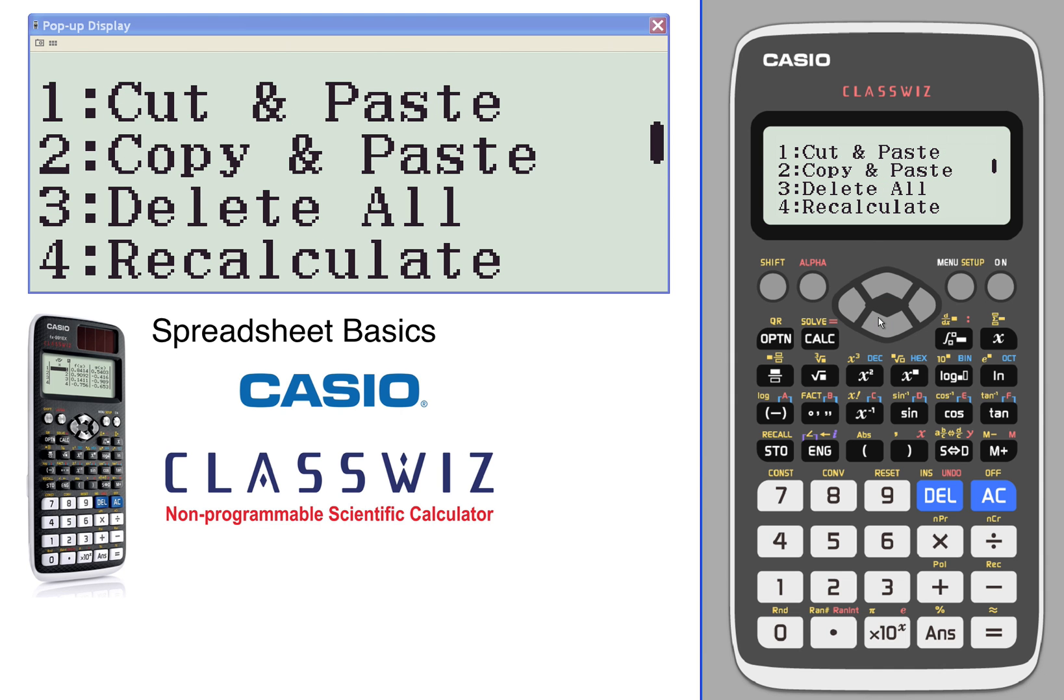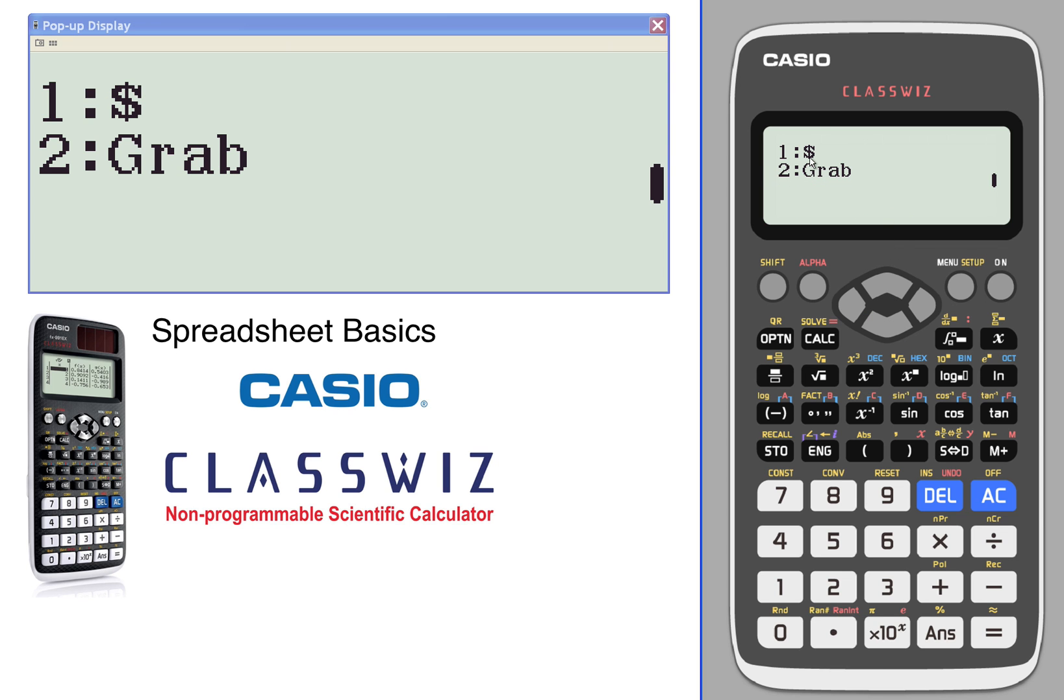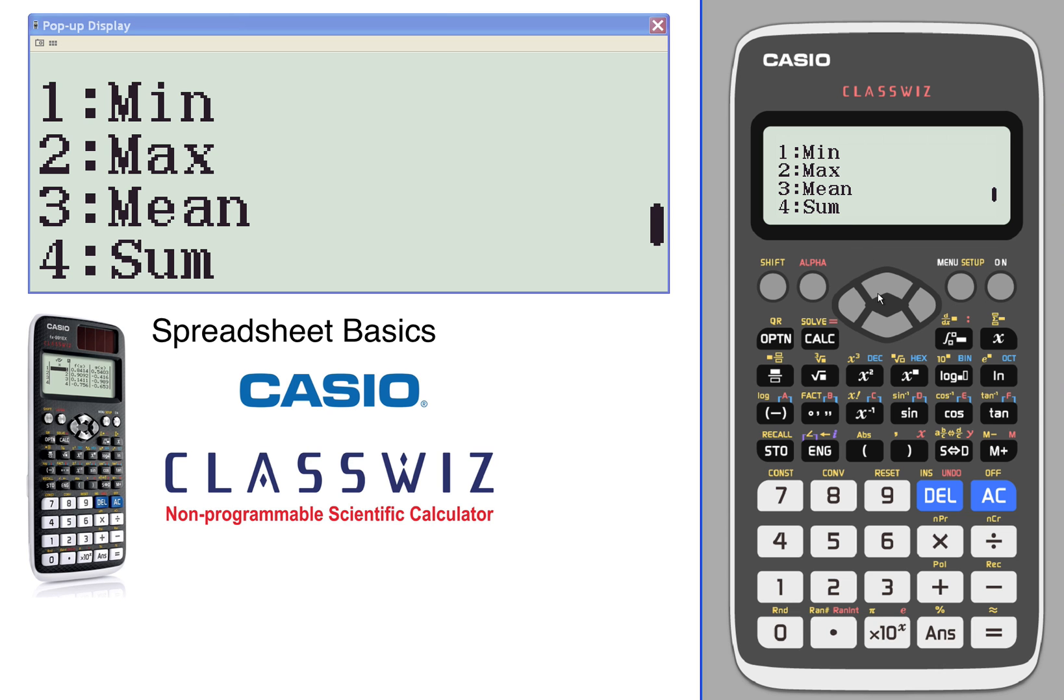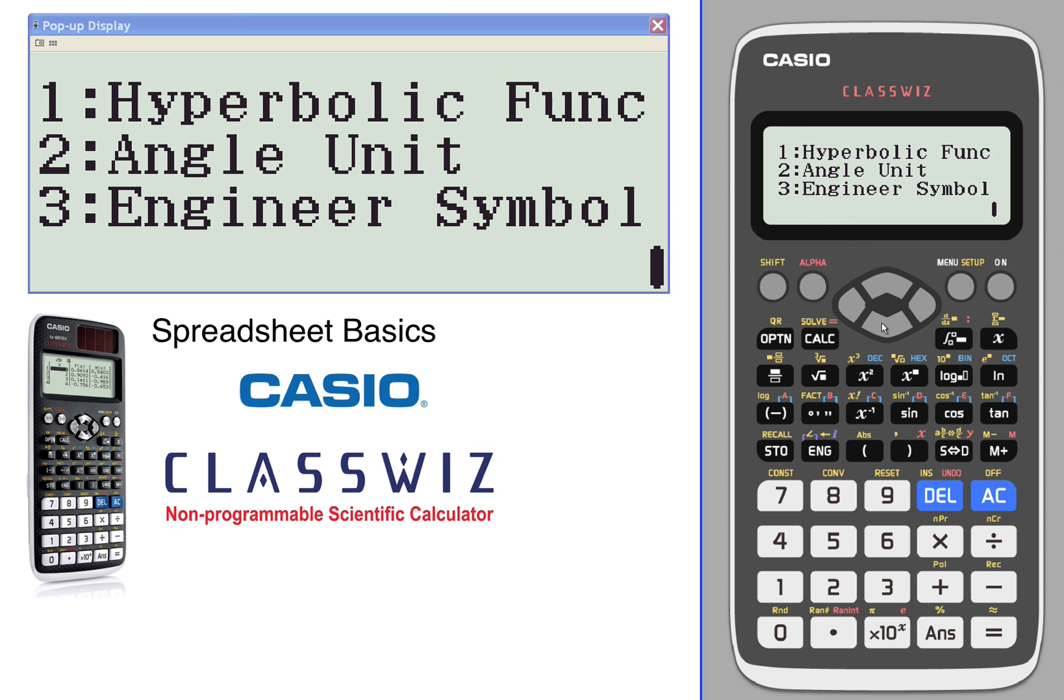Other options: you can edit a cell, figure out how much free space is left, cut and paste, delete all, recalculate. The dollar sign grabs a certain location and only that one. The grab value grabs values from certain places. And here's some calculations: minimum, maximum, mean, and sum, and then some of your universals.